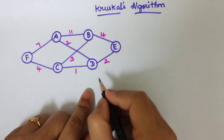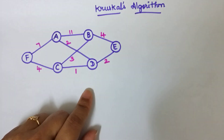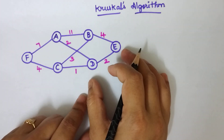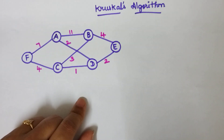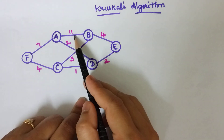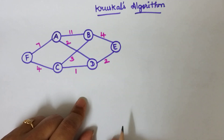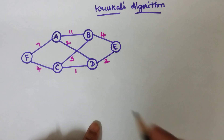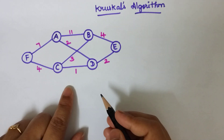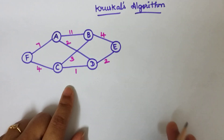Here we are going to solve this graph by applying Kruskal's algorithm and we are going to find the minimum spanning tree for this graph. This Kruskal's algorithm actually uses edges — the weights given for the edges — and based on that we will find the minimum spanning tree. The first step involved in Kruskal's algorithm is to sort all these weights in ascending order.